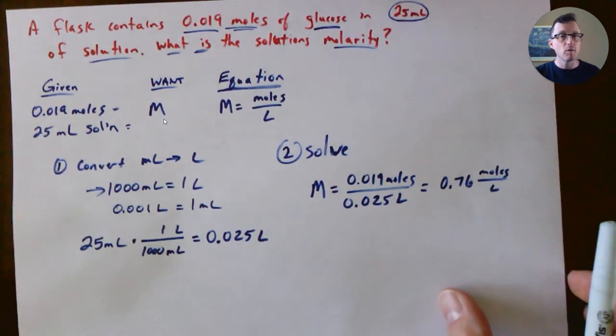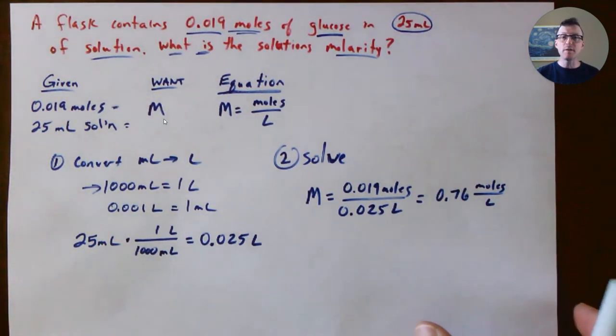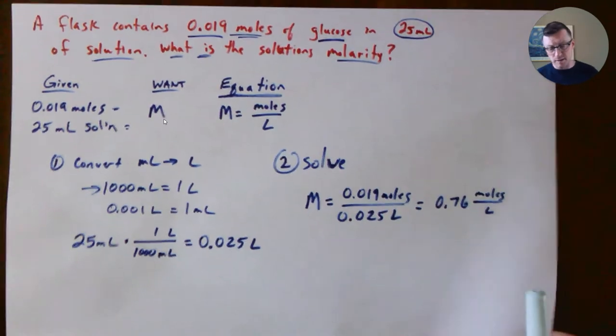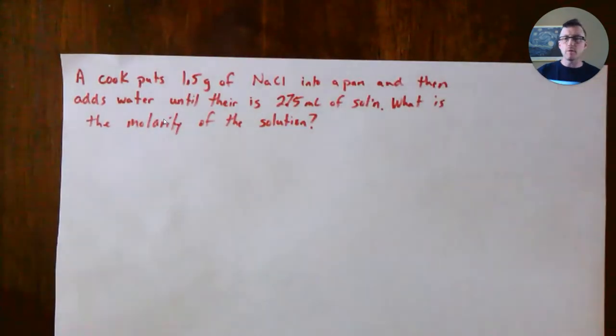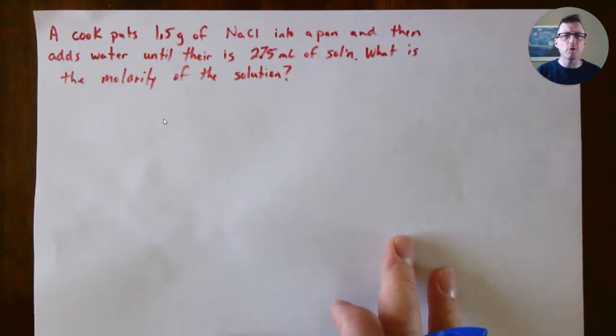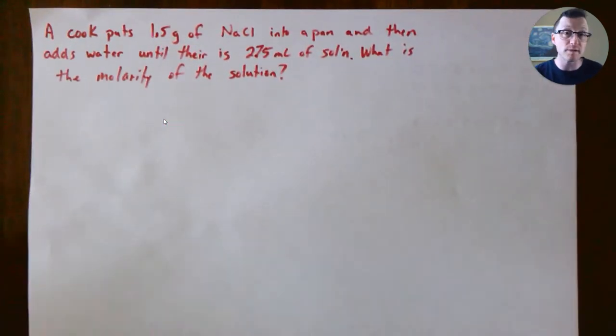That's one example. Another example is one like this, where usually we're measuring out grams. We don't just have a mole sample already set up. So what if we already know how many grams we have?